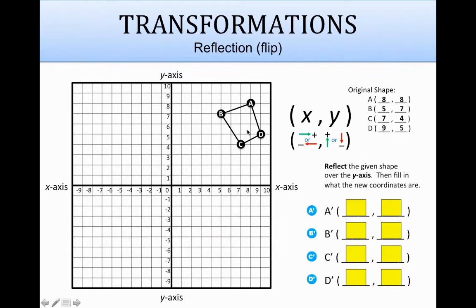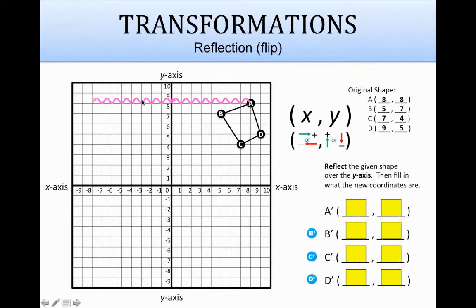Alright, let's do one more. This time we'll start up here. We're still going to reflect it over the y-axis. Let's grab a prime and start on a up here. A is 8 units away on that side, so it's got to be 8 units away on the other side.